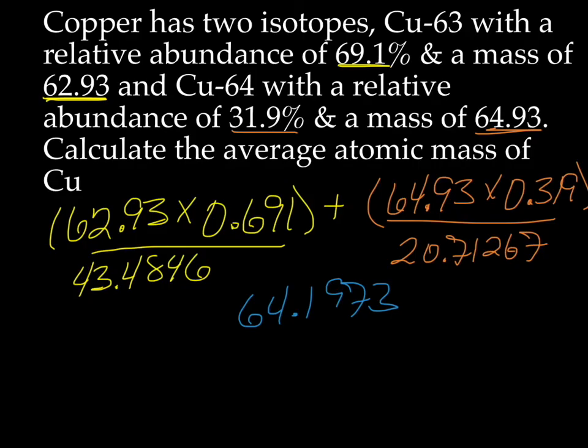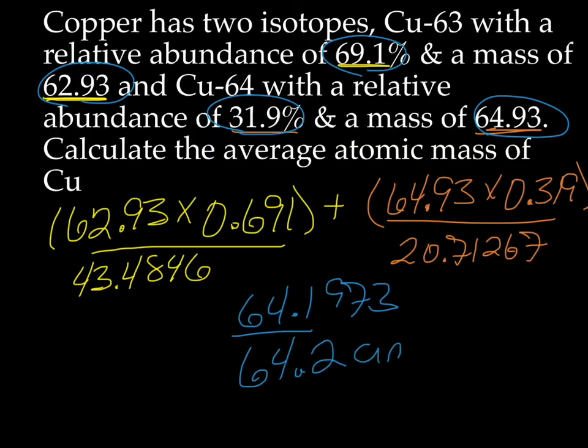And let's look at our sig figs. We have three, four, three, four. So it looks like we're going to have three sig figs. So we'll end up with 64.2 amu.